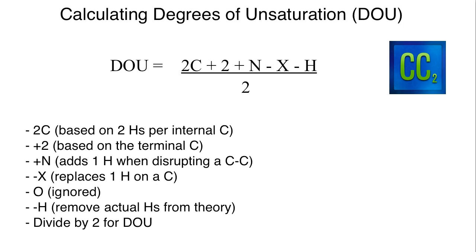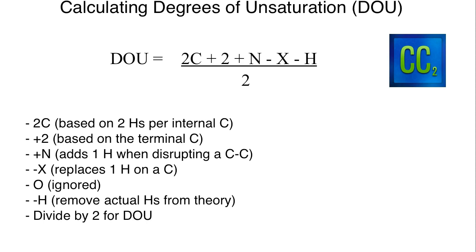Here's the formula. Degrees of unsaturation, abbreviated DoU, is calculated by: two times the number of carbons in the formula, plus two, plus the nitrogens, minus any halides, minus the hydrogens present, all divided by two. That is your formula.